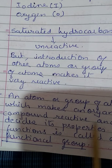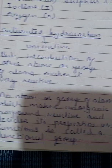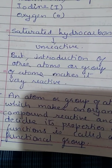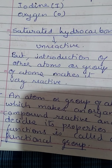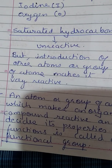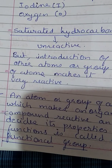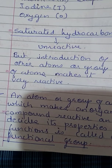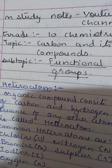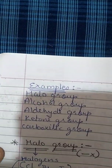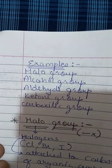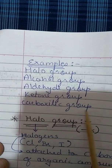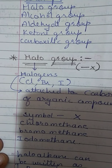The presence of a hetero atom makes the organic compound very reactive and gives it a chemical property. An atom or group of atoms which makes an organic compound reactive and decides its properties or functions is called a functional group. So these additional hetero atoms, when added, give chemical properties and reactivity to that compound. Examples include the halo group, alcohol group, aldehyde, ketone, and carboxylic group.